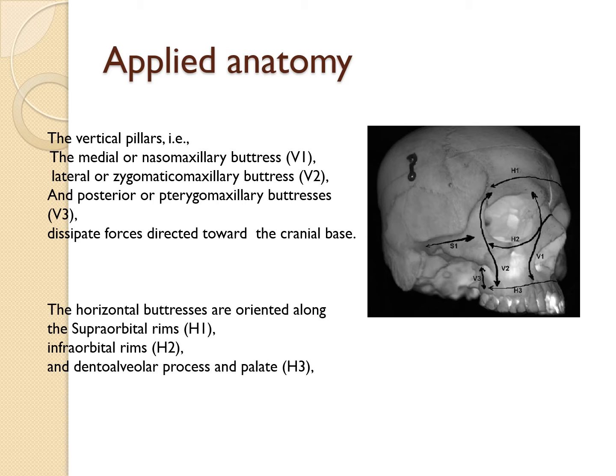The horizontal buttresses include the frontal bar, infraorbital rim or nasal bones, hard palate, and the maxillary alveolus — so supraorbital, infraorbital, and the alveolar process and the palatal region.